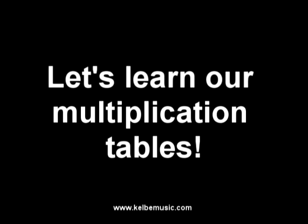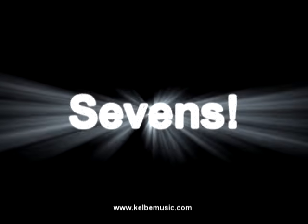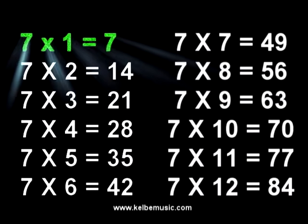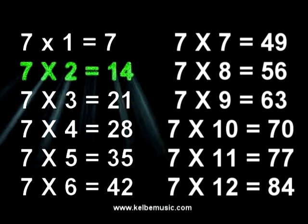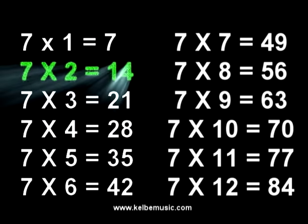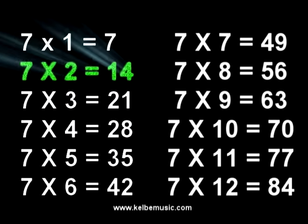Let's Learn Our Multiplication Tables Sevens. Seven times one is seven, seven. Seven times two is fourteen, fourteen.